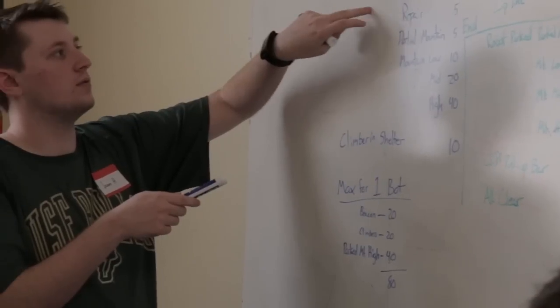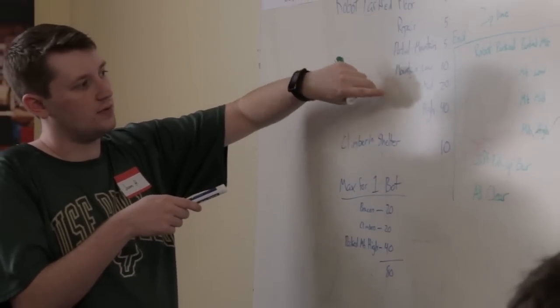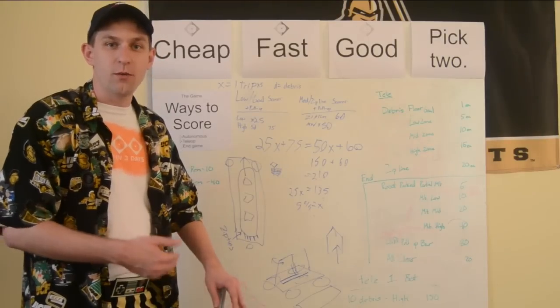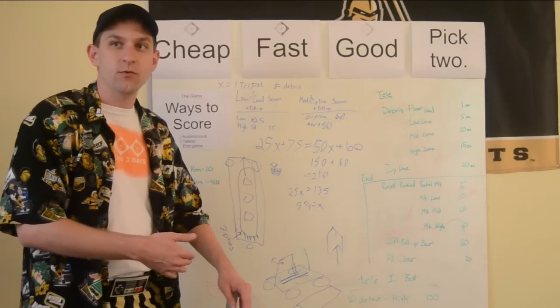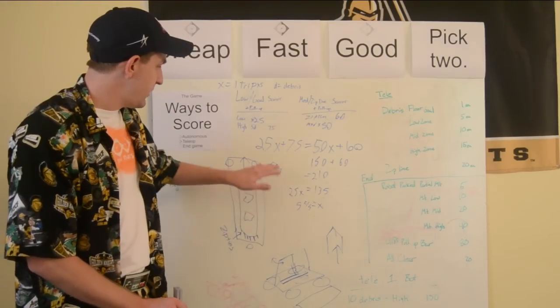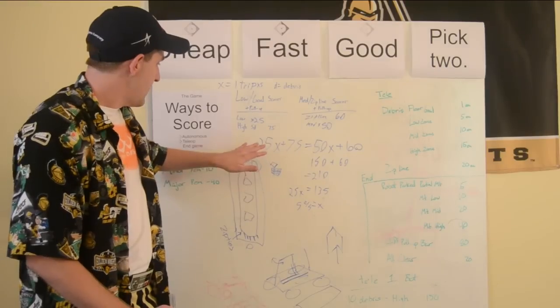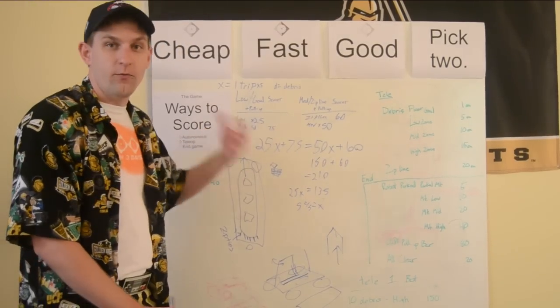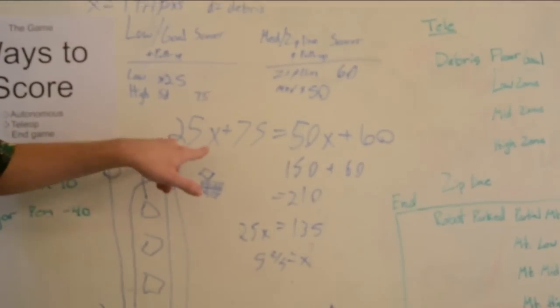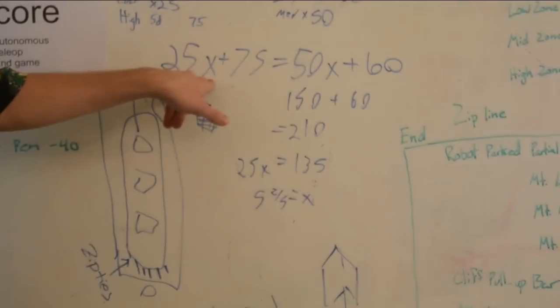So we tried to figure out a couple of things. How many trips can we make to and from the medium goal? How many trips do we think we can make to and from the low goal? We worked out the equation. Basically, if you go to the low goal once and do a full dump, you get 25 points. We're going to call that one trip 25x.